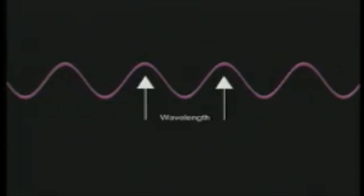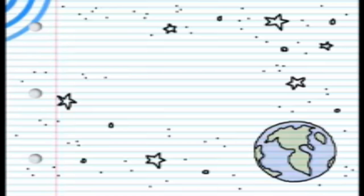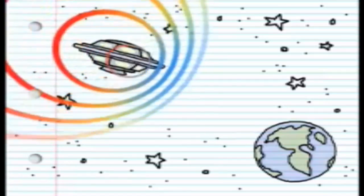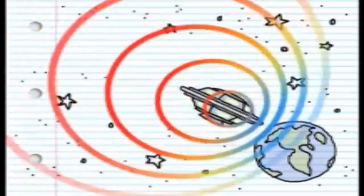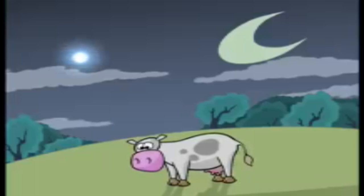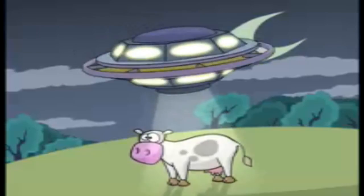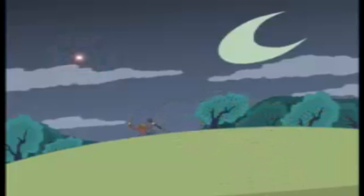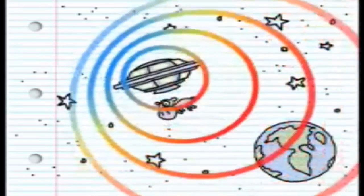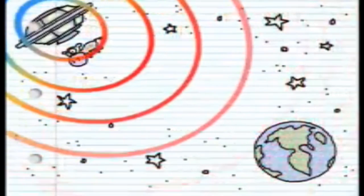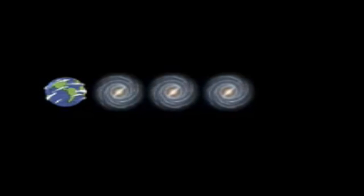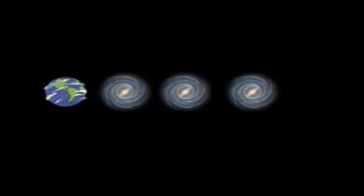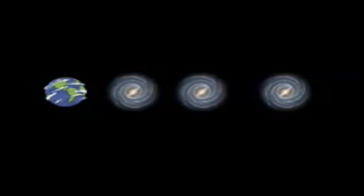Light works the same way. If you have blue light, the waves are closer together; if you want red light, you have to spread the waves apart. If you have a spaceship coming toward Earth super fast, it's going to look blue — that's the blue shift. And when it flies off really fast, it's going to look red because the waves are stretched back out again — the red shift. So for galaxies and stars, the further they are and if they're moving away from us, on telescopes they're going to look red.